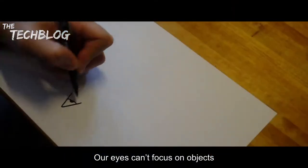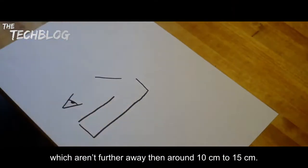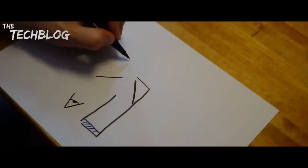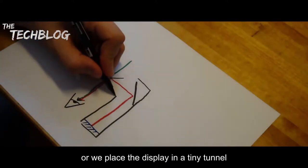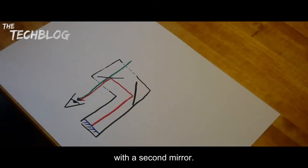Our eyes can't focus on objects which aren't further away than around 10 to 15 cm. Either we make our system more complex by adding lenses, or we place the display in a tiny tunnel with a second mirror.